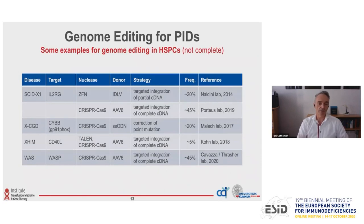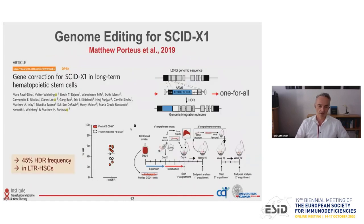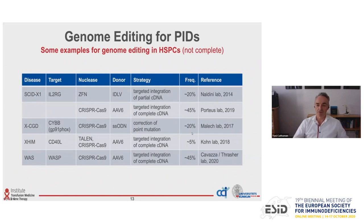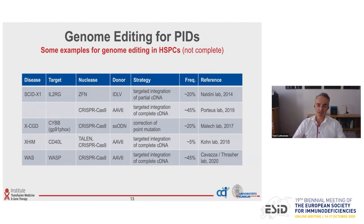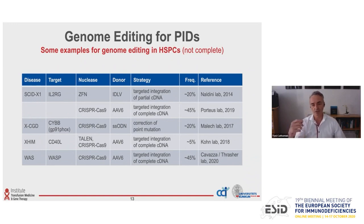Other disorders have been targeted by other groups. Harry Malik targeted the CYBB locus to provide a cure for X-CGD and reached about 20% when correcting a point mutation. Dan Cohen's lab reached about 5% at the CD40L locus in the stem cell compartment to provide a cure for hyper-IgM syndrome. Very recently, the UCL group around Adrian Thrasher and Arianna Cavazza reached 45% gene targeting in the stem cell compartment when targeting the WASP gene to provide a cure for Wiskott-Aldrich syndrome.